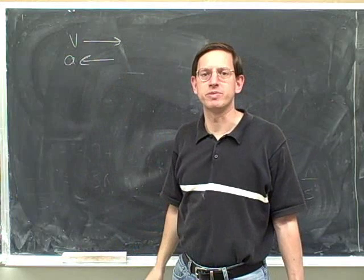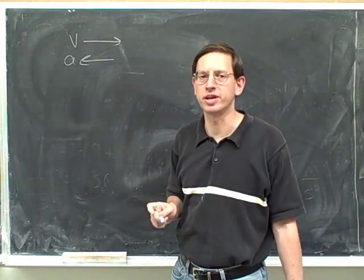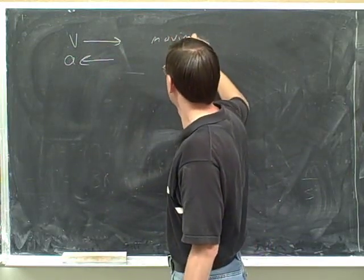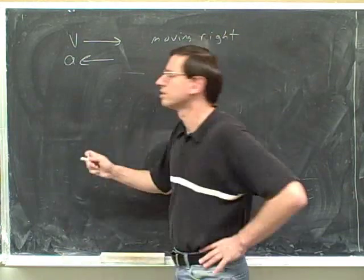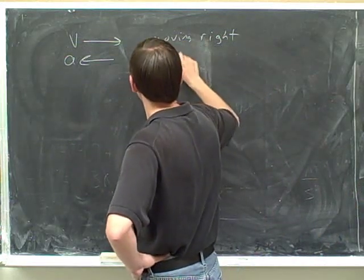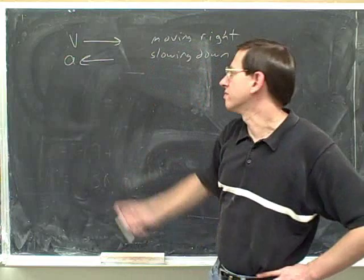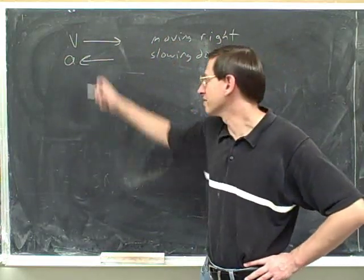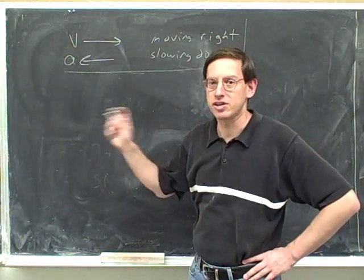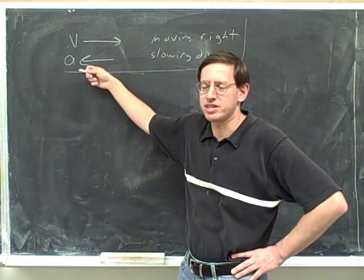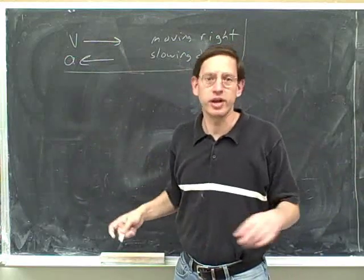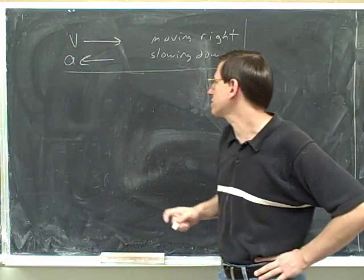Pause the video and write down everything you know about this object. The velocity tells us which way the object is going — so the object is moving to the right. What does the acceleration tell us? The acceleration is opposite to the velocity, which means the object is slowing down. The velocity tells you which way you're moving, and the acceleration tells you whether you're speeding up or slowing down. The acceleration here is pointing to the left, but that doesn't mean we're moving to the left — we're moving to the right. The acceleration has nothing to do with which way you're moving.